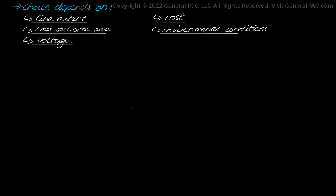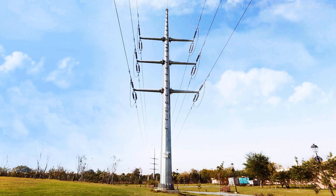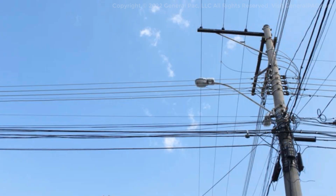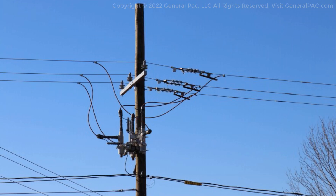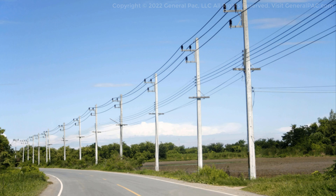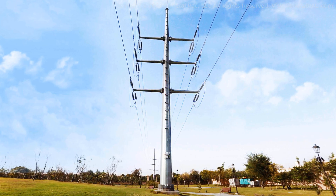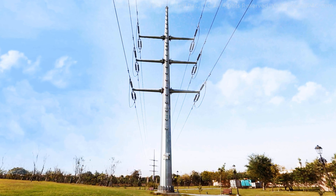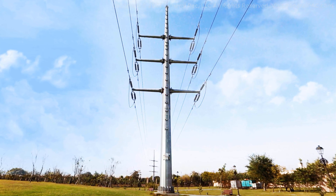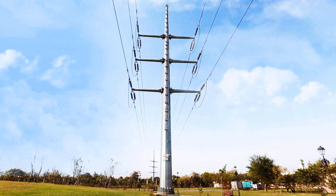For long-distance transmission purposes, steel towers are employed, while wooden poles, steel poles, and reinforced concrete poles are used in cities for low voltage secondary distribution. Steel towers can be up to 50 meters high and be placed among great spans of almost 370 to 460 meters.